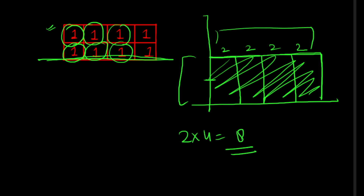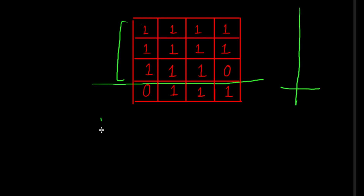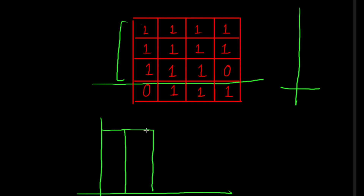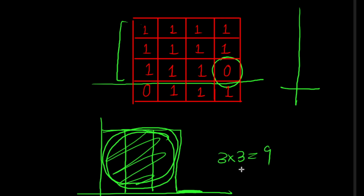Now consider the third row as a base. The histogram will look like: heights three, three, three, and since there is a zero in the matrix, that bar will be zero. For this histogram the maximum enclosed area is three cross three, which equals nine.